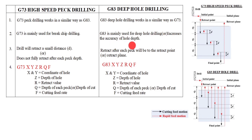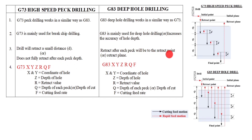Third point: with G73, the drill retracts only a small predetermined distance D — it does not fully retract after each peck depth. With G83, the drill retracts fully after each peck, all the way back to the retract point or retract plane. We will see the retract point or retract plane in detail.